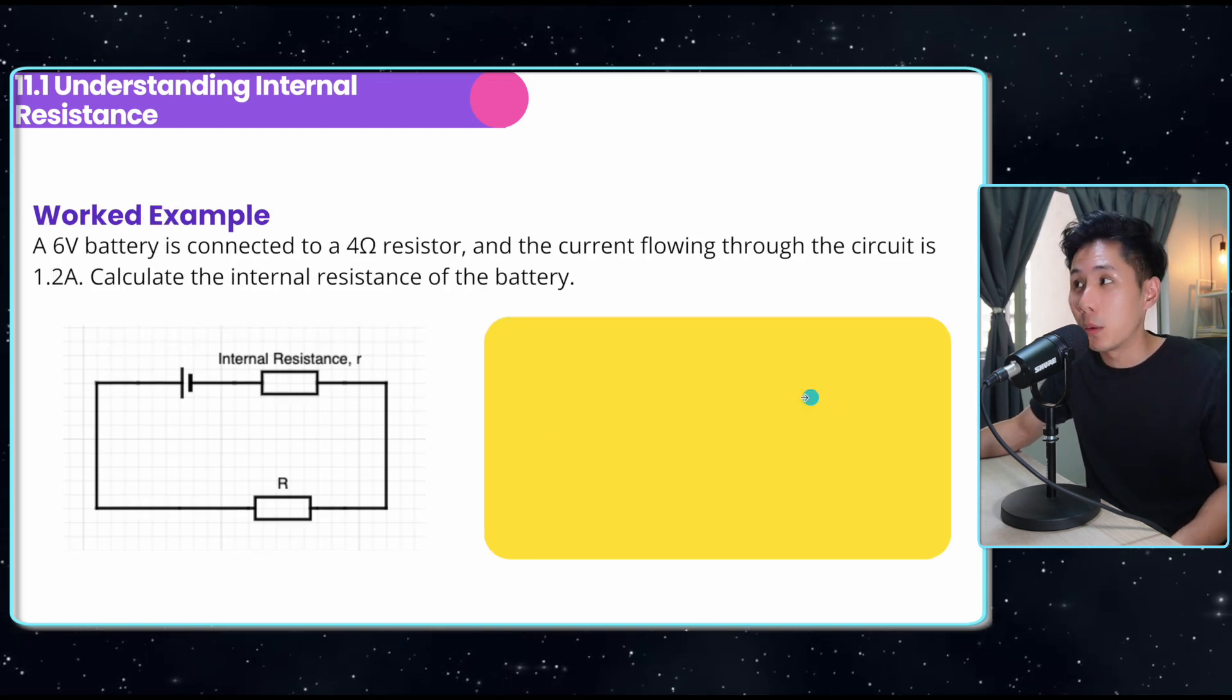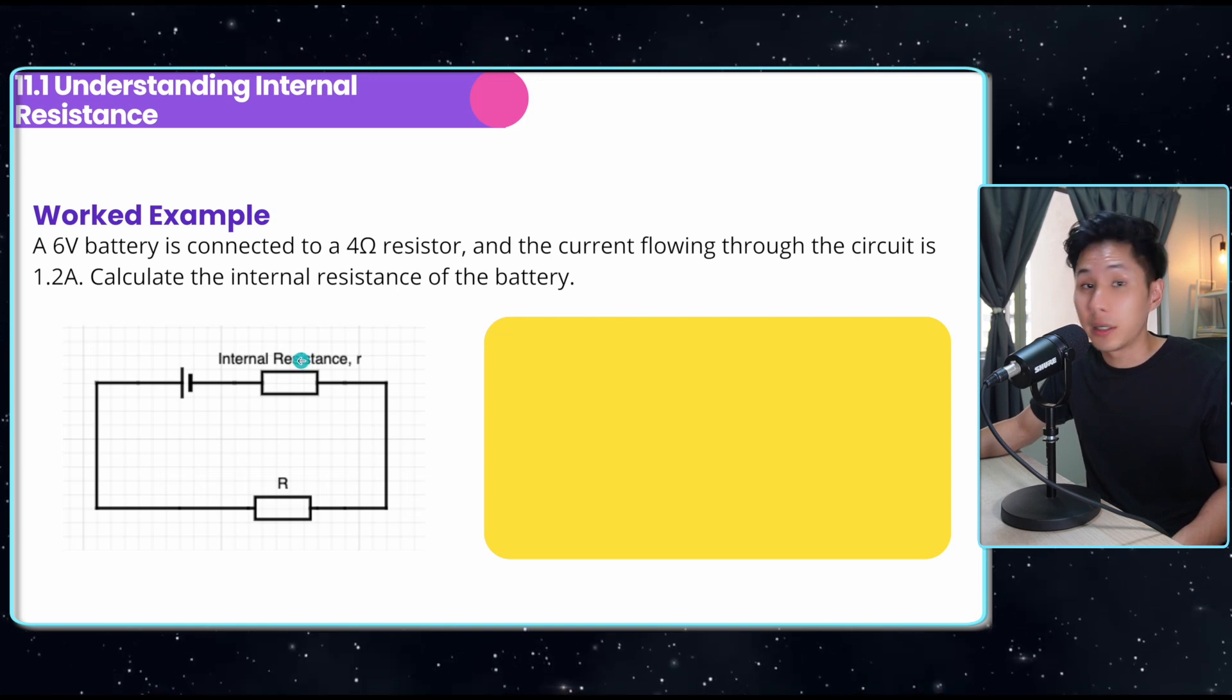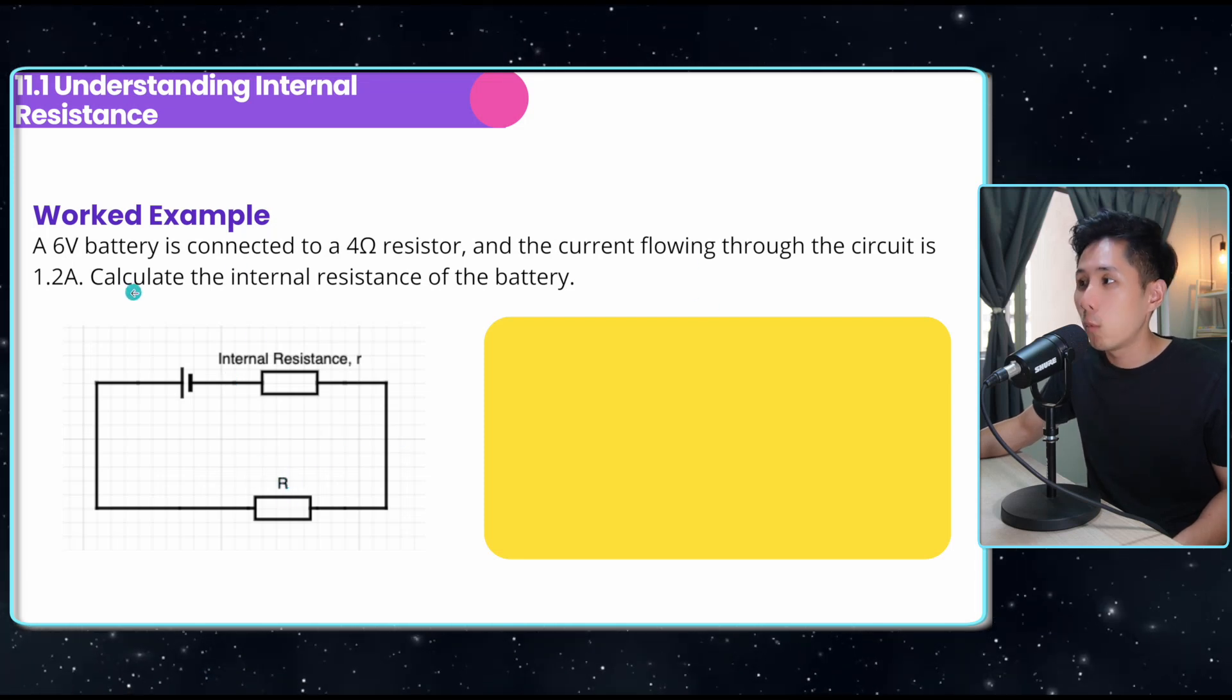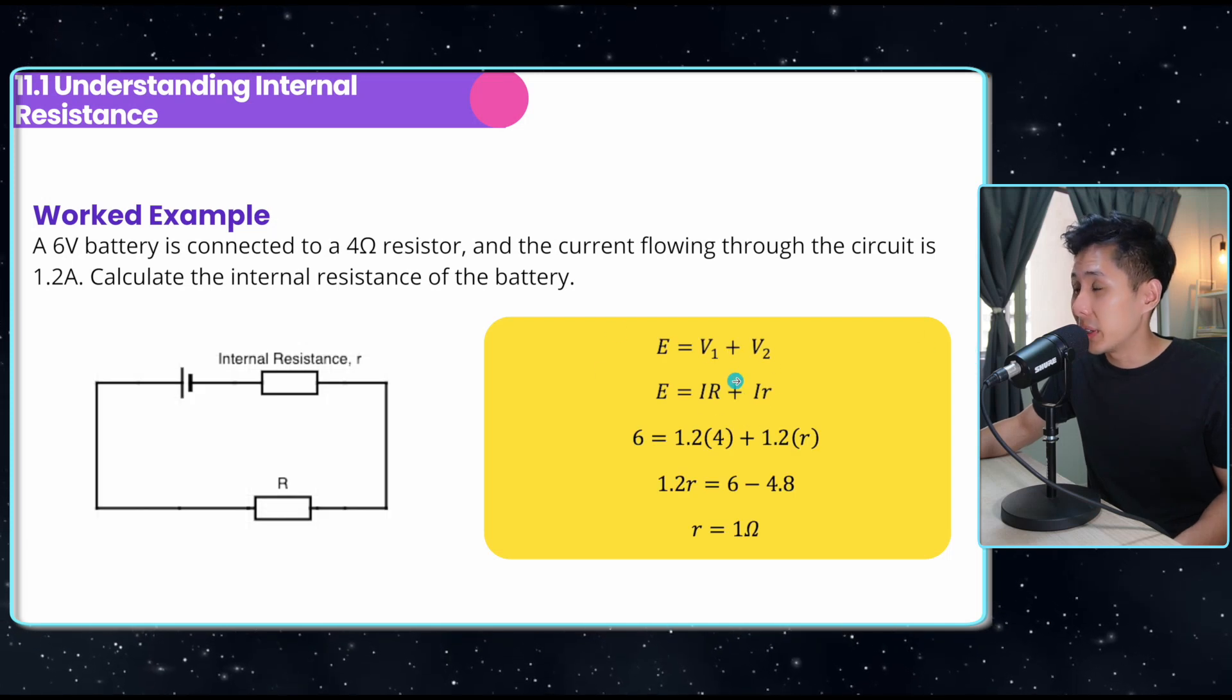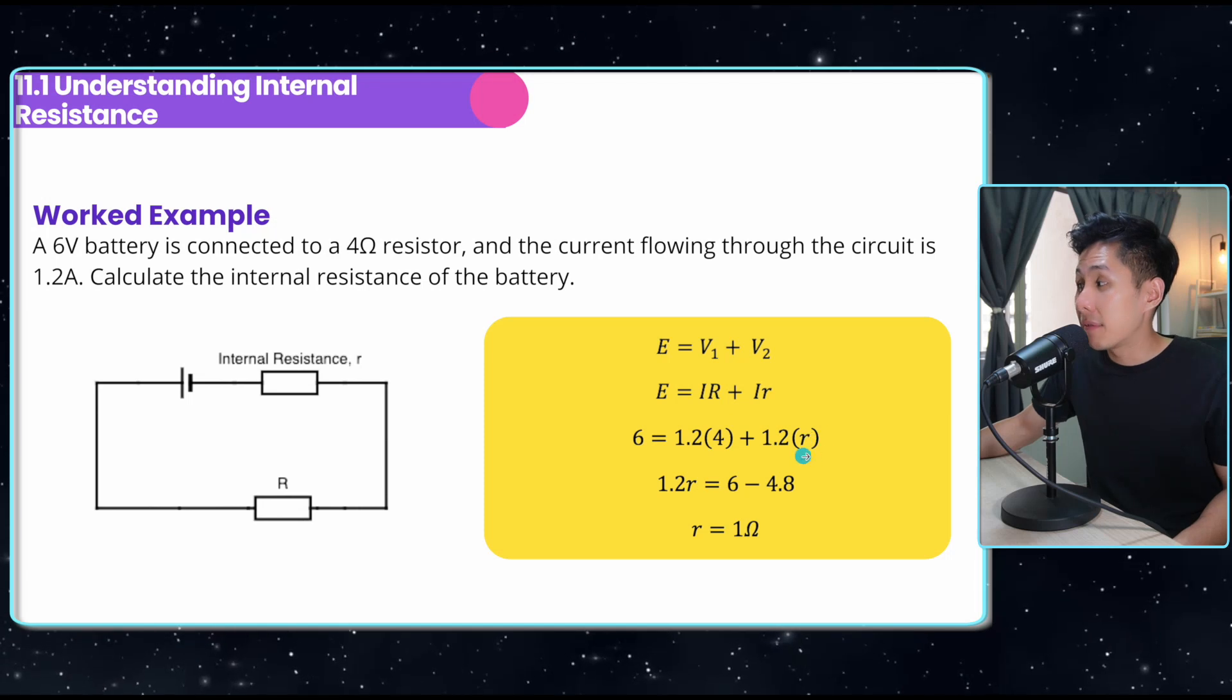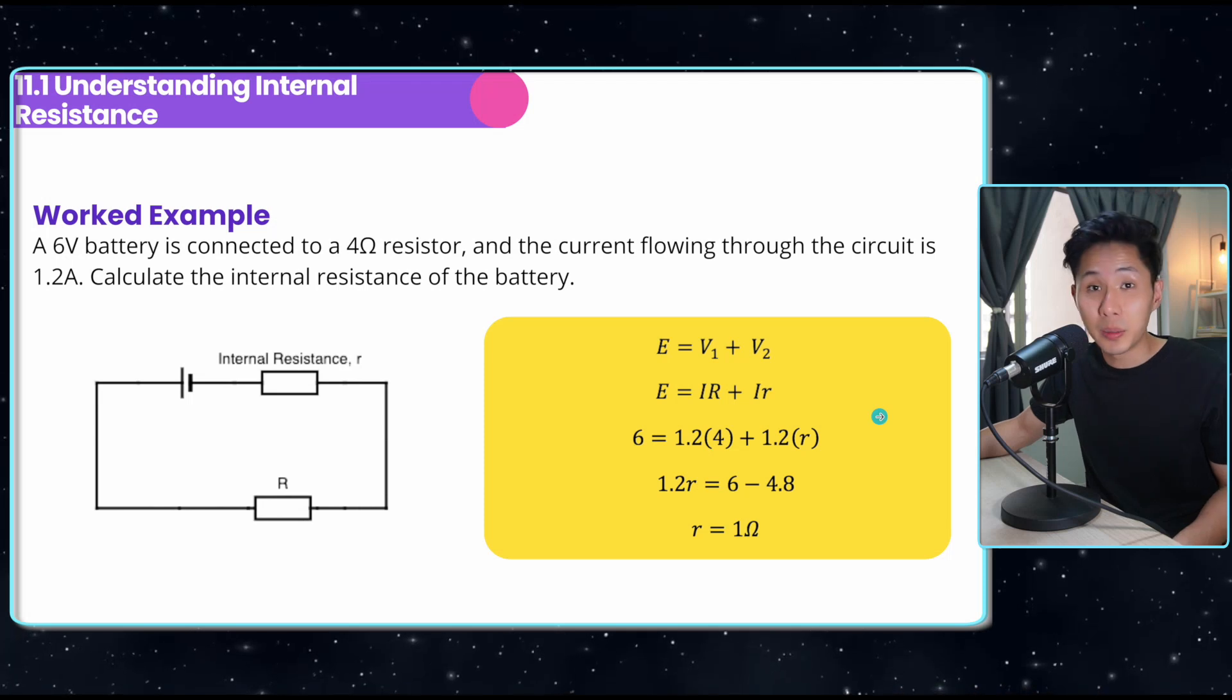Now let's solve a worked example to help you understand how we can include internal resistance into the calculation. Say I have a six-volt battery connected to a four-ohm resistor, and the current is 1.2 amperes. What we need to do is calculate the internal resistance. We can use the formula here, just plug in all the values you got: current, voltage, resistance, and we can find the internal resistance by calculating the value of r in this equation. And that's how you do it.